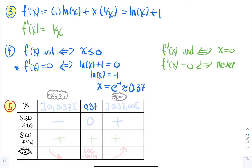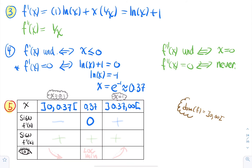In the table, we consider intervals within the domain: from 0 to 0.37, and then after 0.37. We don't need to worry about zero or before it, since everything there is undefined. The point 0.37 is included because the first derivative is zero there.